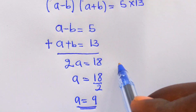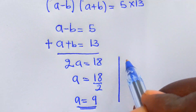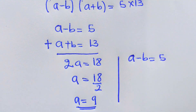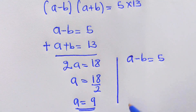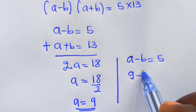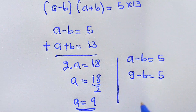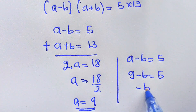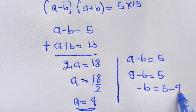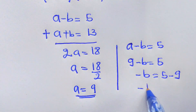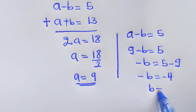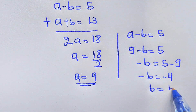Now substituting back into a minus b equals 5, we get 9 minus b equals 5, so negative b equals 5 minus 9, which means negative b equals negative 4, and therefore b equals 4.